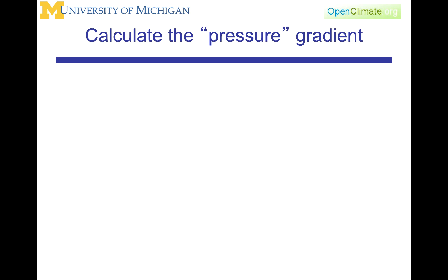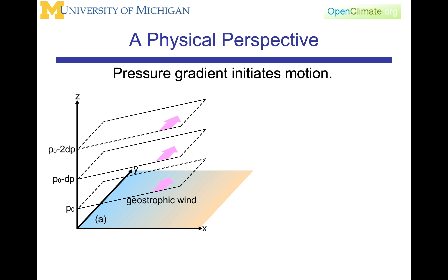What we want to do is calculate the pressure gradient. First, we're going to look at it physically. When I look at things physically, I like to draw a picture, because I think drawing a picture in concert with mathematical approaches and verbal approaches — if you look at them all together and can make sense of all of them together — gives you a stronger understanding of how to approach a problem.